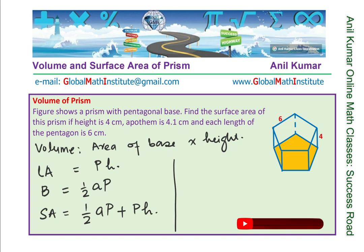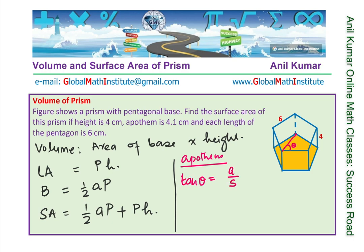To find the apothem, if the angle theta is 54 degrees (for a pentagon), we use tan(theta) equals apothem over the side length, so apothem equals side length times tan(theta). For a pentagon, theta is 54 degrees. If the shape is different — say a hexagon — the angle is 60 degrees, but you use the same formula. Depending on the shape, use this formula to find the apothem and then the area of the base. Total surface area is perimeter times height plus half of apothem times perimeter.